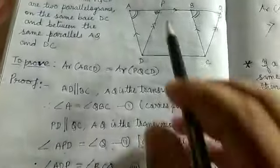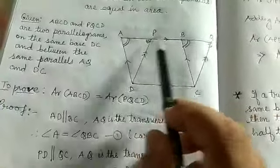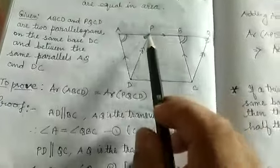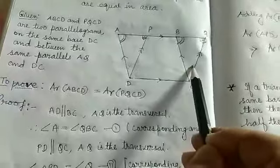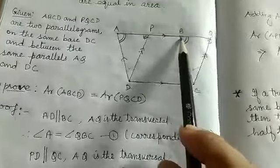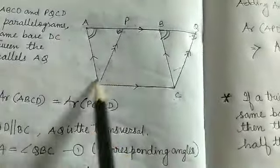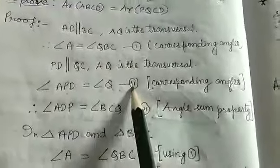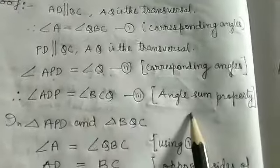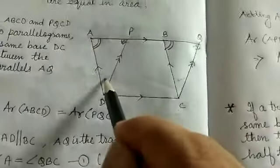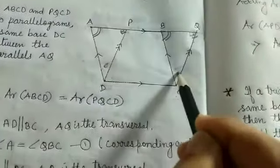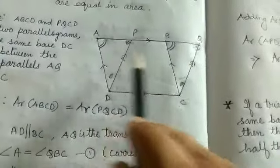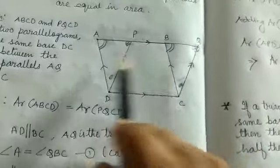In two triangles, if two angles are equal, the third angle will also be equal according to the angle sum property. So angle ADP must be equal to angle BCQ. Therefore, when two angles are equal, the third angle is also equal by the angle sum property — this angle and this angle became equal.